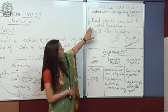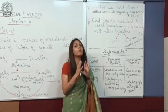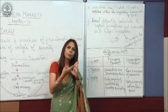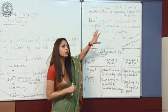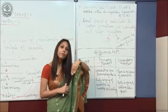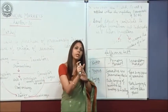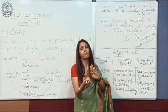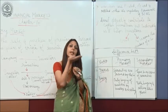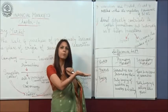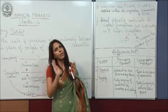Secondary markets do not directly contribute to capital formation, but they contribute indirectly. They provide a facility to the investors that they can exit any time from the market, and by purchasing the security of any company, they can become a member of that company. If any investor is buying shares of a company through another investor, so indirectly he is becoming the member of that particular company, and that is why secondary market indirectly contributes to capital formation.